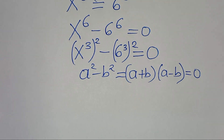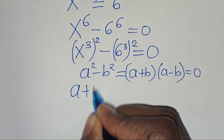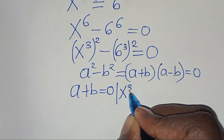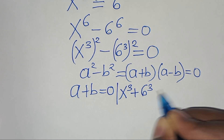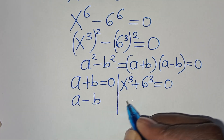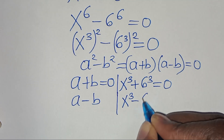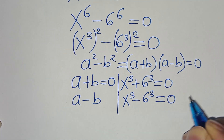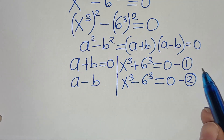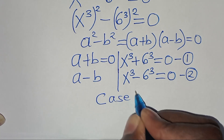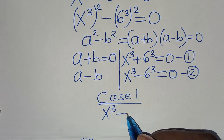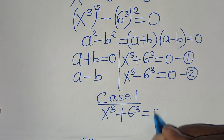So we have two cases. Case 1: x^3 plus 6^3 equals 0. Now x^3 + 6^3 is in the form of a^3 + b^3, which is the sum of two cubes.